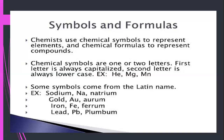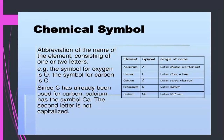Here you can see some elements with their symbols — for example, aluminium Al, fluorine F, carbon, potassium, sodium. These are all different symbols used for elements. We can define the chemical symbol as the abbreviation of the name of the element, consisting of one or two letters. For example, the symbol for oxygen is capital O and the symbol for carbon is capital C.